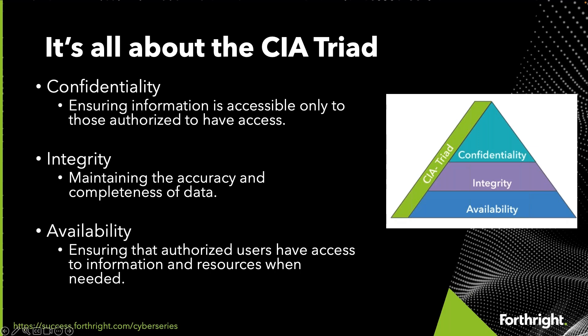The CIA triad really lays out the basic pillars of an information security system. Confidentiality is about ensuring information is only available to the people that should have access to it. Integrity is about maintaining the overall accuracy and completeness of the data — one example of this is file revision history. Availability is making sure the right data is available to the right people at the right times.